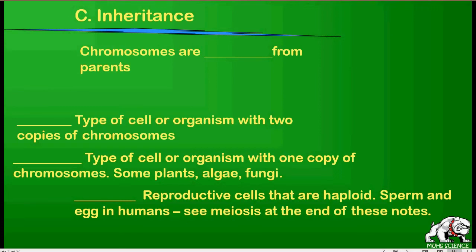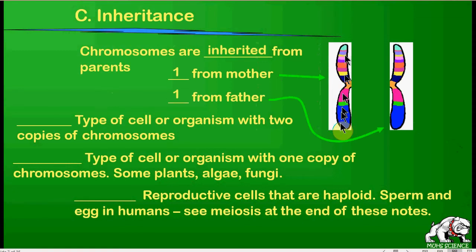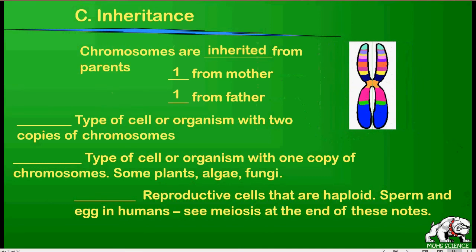Chromosomes are inherited from parents — you get them from egg and sperm cells. The egg contains half of the genetic information, so you get one set of DNA from your mother and one set from the father. These are chromatids — one side of a chromosome. When sperm and egg combine to form the zygote, you get one full chromosome, half from your mother and half from your father.